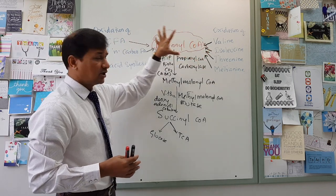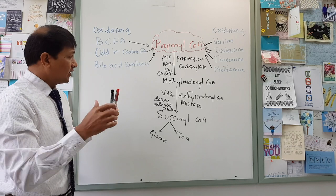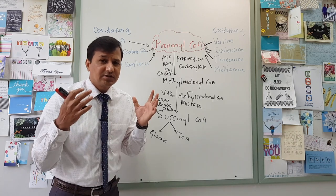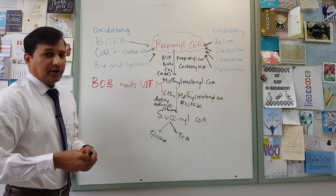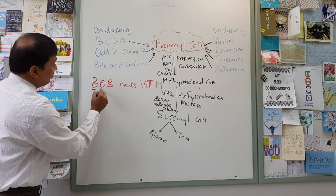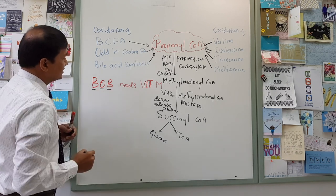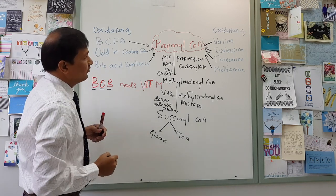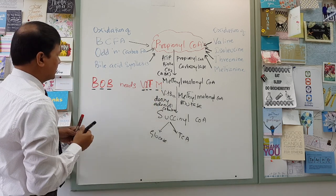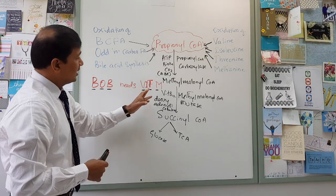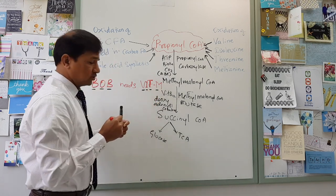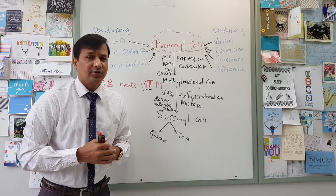To remember the sources of Propionyl-CoA, here is a mnemonic given by two of my students, Hina Javed and Vincent Tran: 'Bob needs vitamin M.' B is for BCFA oxidation (branched chain fatty acid oxidation), O is for oxidation of odd-number carbon fatty acids, B is for bile acid synthesis, V is for valine, I is for isoleucine, T is for threonine, and M is for methionine.